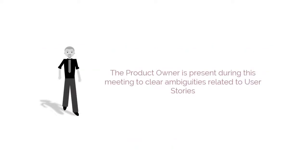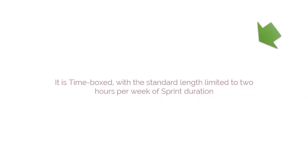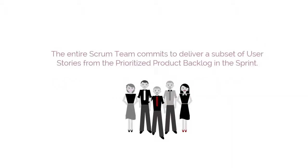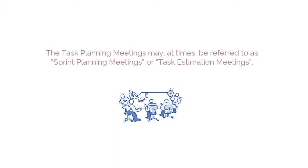The product owner is present during this meeting to clear ambiguities related to user stories in the prioritized product backlog. This meeting should be time-boxed, with the standard length limited to two hours per week of sprint duration. This assists in preventing the tendency to stray into discussions that should occur in other meetings, like the release planning or sprint review meetings. By the end of the meeting, the entire scrum team will have committed to deliver a subset of user stories from the prioritized product backlog in the sprint. Task planning meetings may at times be referred to as sprint planning meetings or task estimation meetings.